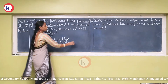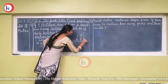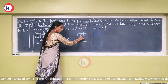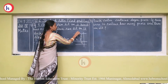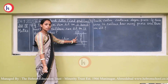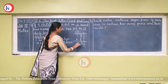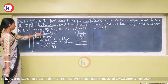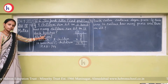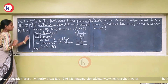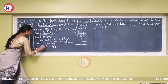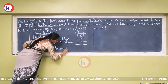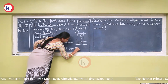We calculate 18 multiplied by 8. Starting from the unit place: 8 eights are 64, write 4 and carry 6. Then 8 ones are 8, plus 6 is 14, giving 144. Answer: 144 children can sit on eighteen benches.